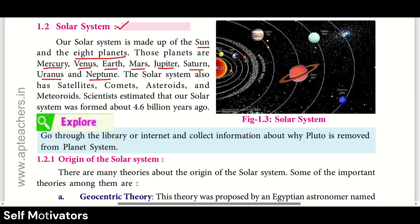The solar system also has satellites, comets, asteroids, and meteoroids. Scientists estimated that our solar system was formed about 4.6 billion years ago.